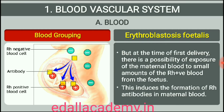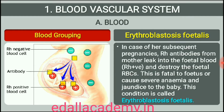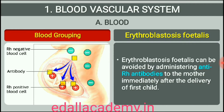In such cases, the mother starts preparing antibodies against Rh antigen in her blood. In case of her subsequent pregnancies, the Rh antibodies from the mother, Rh negative, can leak into the blood of the fetus, Rh positive, and destroy the fetal RBCs. This could be fatal to the fetus or could cause severe anemia and jaundice to the baby. This condition is called erythroblastosis fetalis. This can be avoided by administering anti-Rh antibodies to the mother immediately after the delivery of the first child.